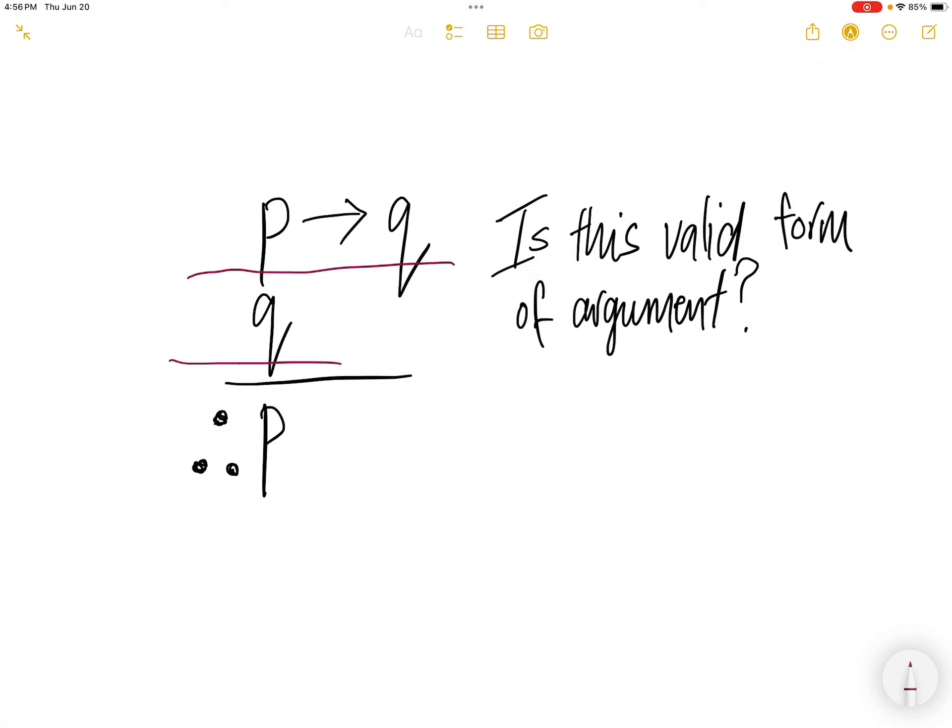P implies Q and Q, therefore P. Is this valid form of argument?